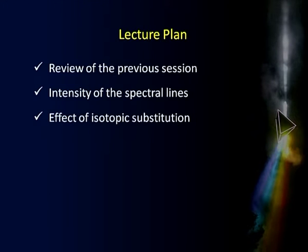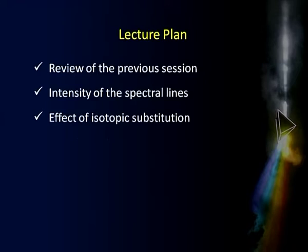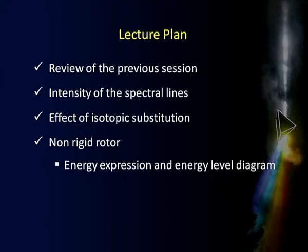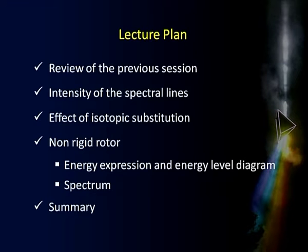Then we will come to the effect of isotopic substitution — if I replace one of the atoms of a molecule by an isotope, what happens to the spectrum and how do we make use of that information. Thereafter we will take up the effect of non-rigidity, because our molecule is not rigid though we started with a rigid rotor as a model. We will see the energy expression and energy level diagram for a non-rigid rotor, and the resulting spectrum. Towards the end we will sum up today's session.